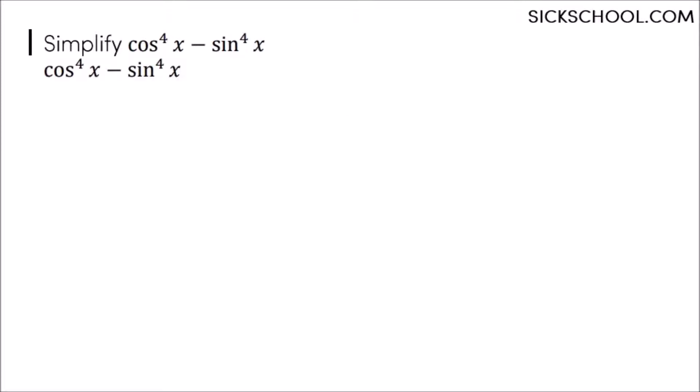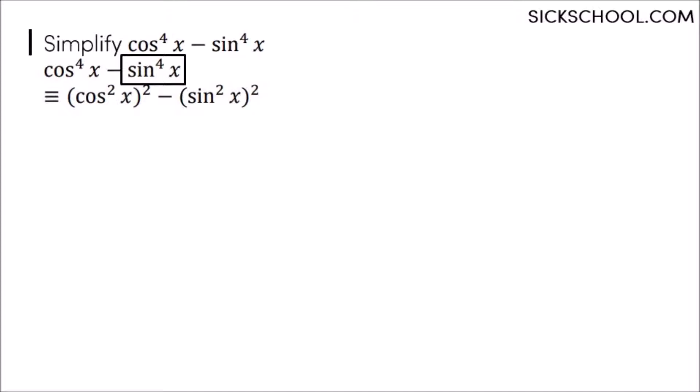The question says, simplify this. Notice this is cos squared, squared. And this is sine squared, squared. So you've got the difference of two squares.